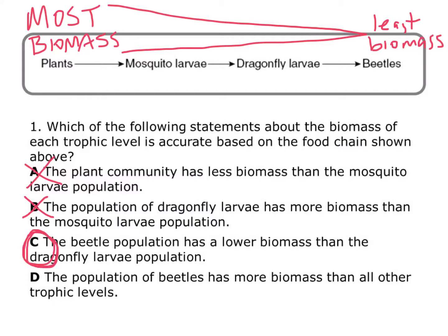We always want to go through all answer choices just to make sure. Answer D says the population of beetles has more biomass than all of the trophic levels — but it doesn't have more biomass; it has less biomass than all of the other populations. So D is not correct, and C is definitely the answer.